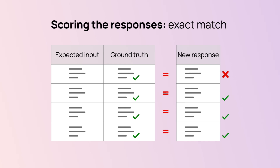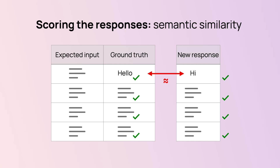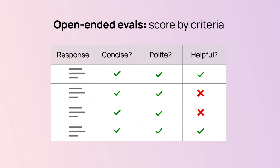Sometimes you can look for exact matches between your ground truth and the responses you get. But often there are many ways to express meaning without word-by-word accuracy, so there are ways to test for semantic similarity. You can also run open-ended evaluations where you score responses by criteria like conciseness or politeness. Some qualities are objective and easy to measure, like if the output is within the right length. But things like tone of response are very subjective and hard to quantify. You can use interesting methods here, like using an LLM to score this — we'll talk more about it.